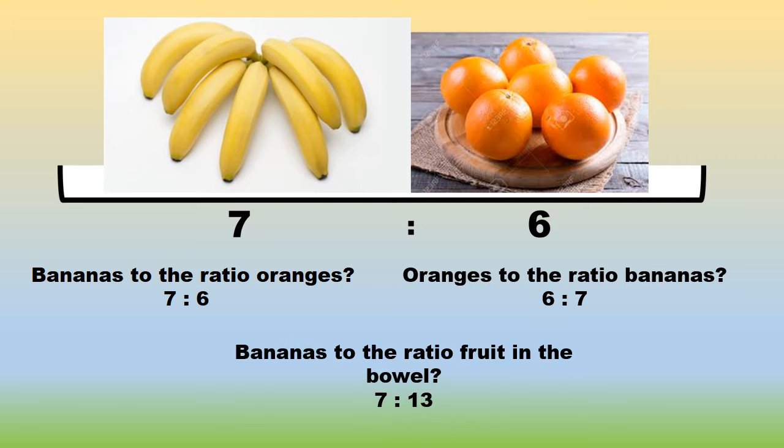And what if we ask you, what is the ratio of the bananas to the total fruit in the fruit bowl? The bananas are 7 and the total number of fruit is 13. 7 plus 6 is 13 in total. So you can write it up as 7 to the ratio 13.